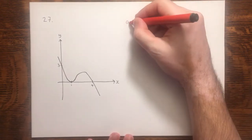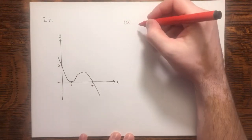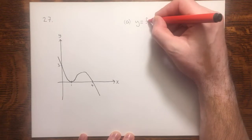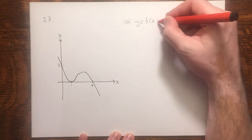In part a, we are asked to sketch, and each of these must be sketched on separate diagrams. In part a, the graph we have to sketch is f of x plus 1.